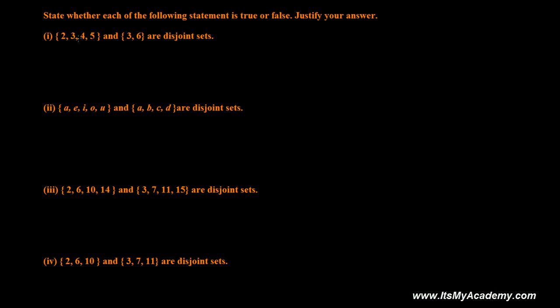The first question: {2, 3, 4, 5} and {3, 6} are Disjoint Sets - true or false? Very easy. Just see if there is anything common. Yes, we got 3 here and 3 here also. So it's not Disjoint Sets.